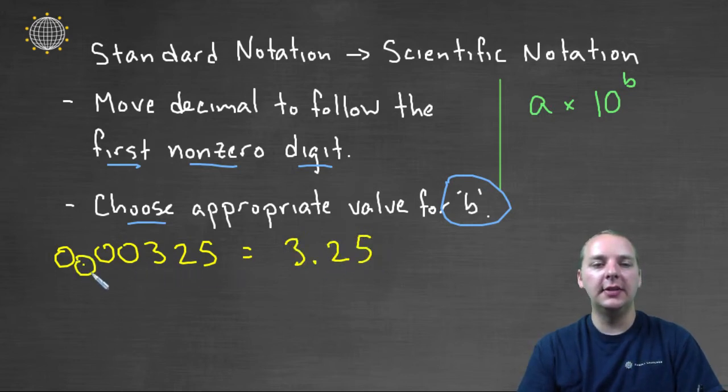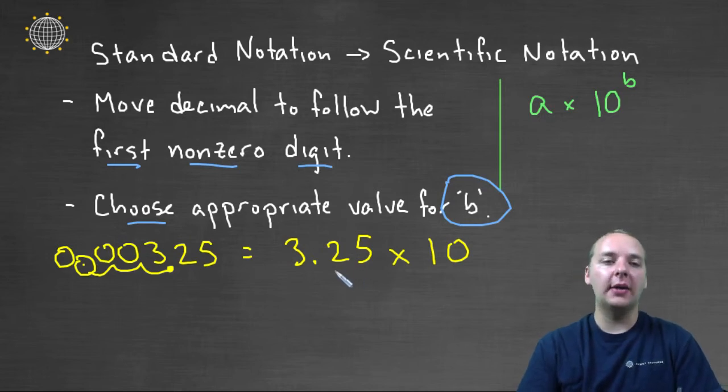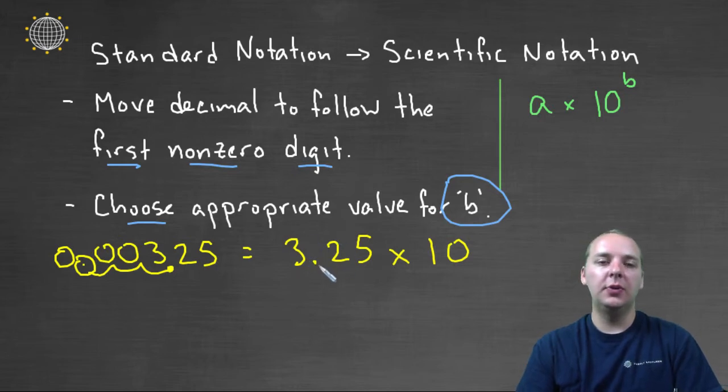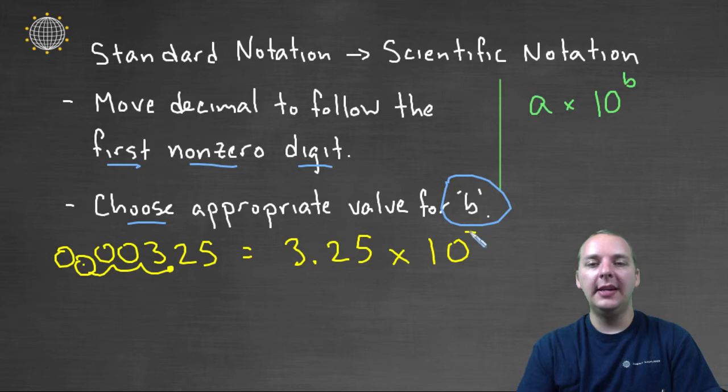So we would need to have as our a 3.25, it's the same number but I moved this decimal place 1, 2, 3 units to the right. So we'd have 3.25 times 10 to the something. Now if we start with 3.25 and we want to get back to 0.00325, this decimal place will need to move to the left to get there, which means we'll need to move negative three units.